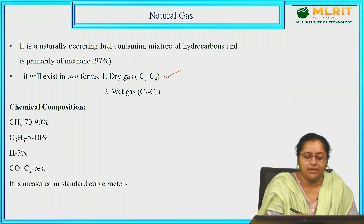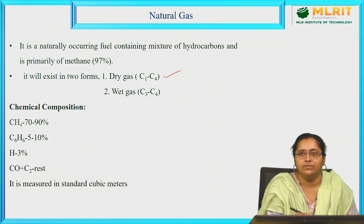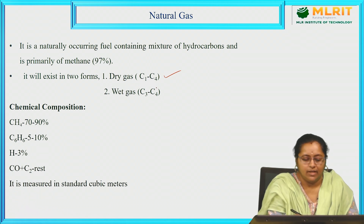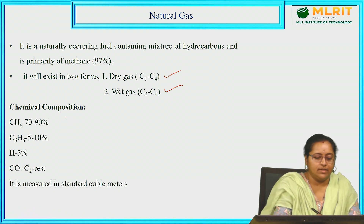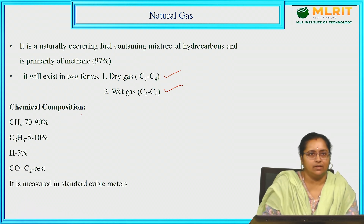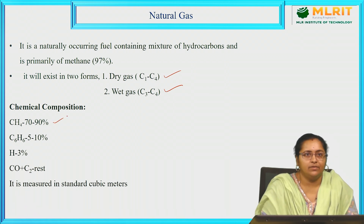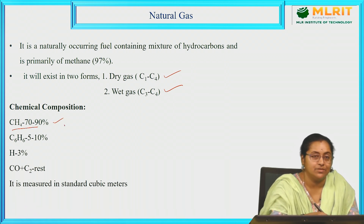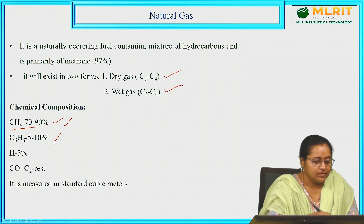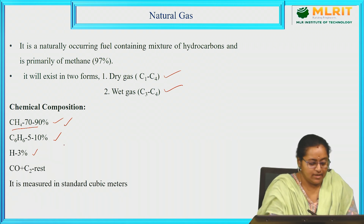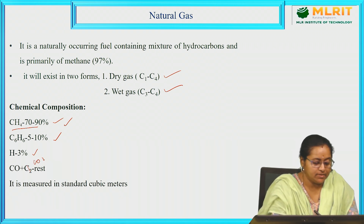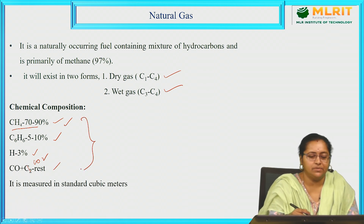Dry gas has a carbon content of C1 to C4, and wet gas is from C3 to C4 only. Coming to its chemical composition, the major component is methane at 70 to 90 percent. The next component is benzene at 5 to 10 percent. The minor component is hydrogen at 3 percent, and the remaining percentage is a mixture of CO₂ and CO. This is the chemical composition of natural gas, and it is measured using standard cubic meters.